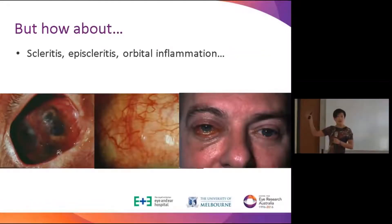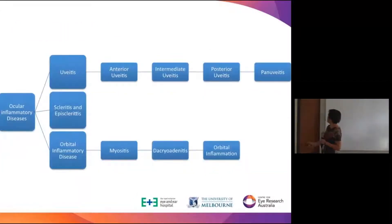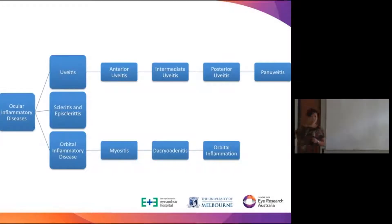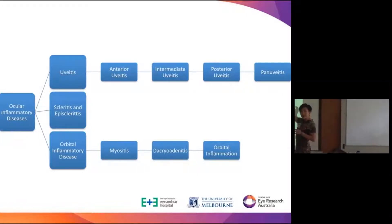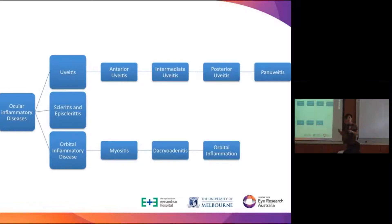You might ask about episcleritis, scleritis, and myositis — these are also inflammations but they are different. Episcleritis, scleritis, and orbital inflammation all sit under the umbrella term of ocular inflammatory disease. Uveitis is inflammation inside the eyeball; scleritis and episcleritis are inflammation of the eyeball wall and its coverings; and orbital inflammatory disease is inflammation outside the eyeball but inside the bony orbit.